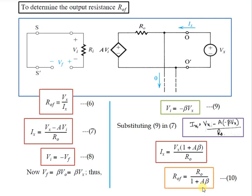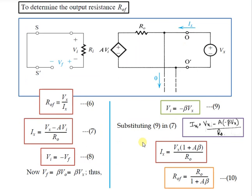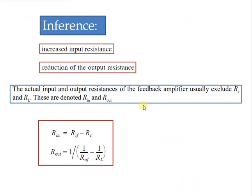The connection at the output side is a shunt connection. Shunt sampling or voltage sampling at the output results in a decrease in amplifier output resistance by a factor of 1 + A·beta — the amount of negative feedback — which is again one of the desirable properties of the voltage amplifier. In conclusion, this circuit is a series shunt feedback topology.